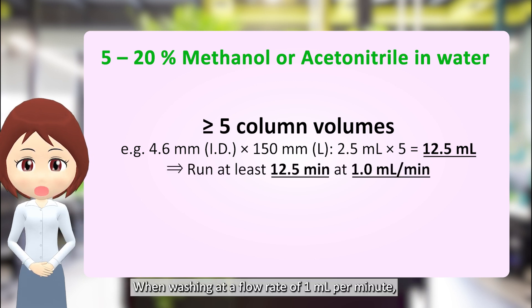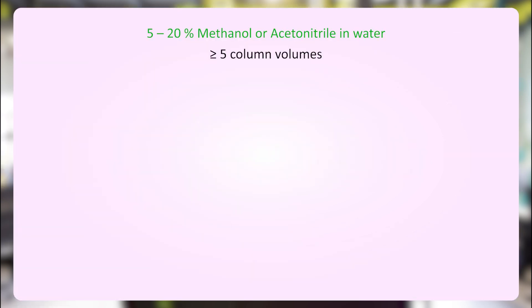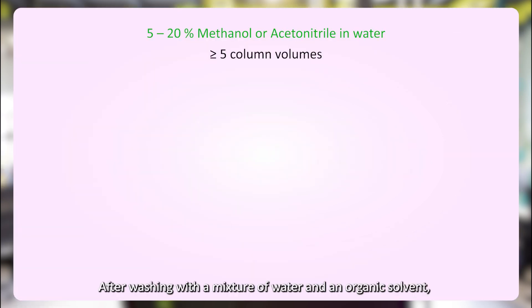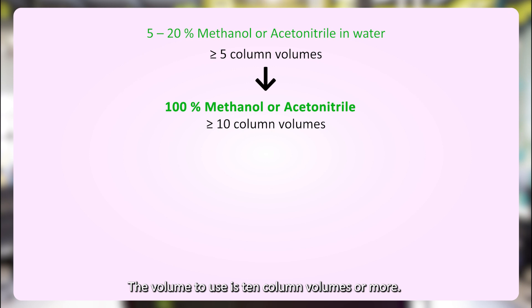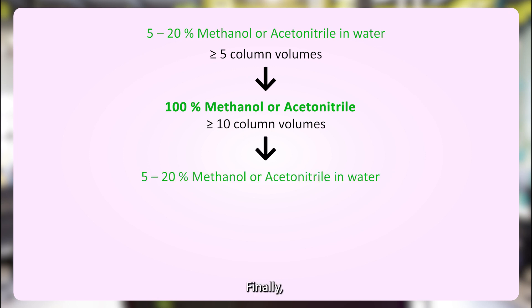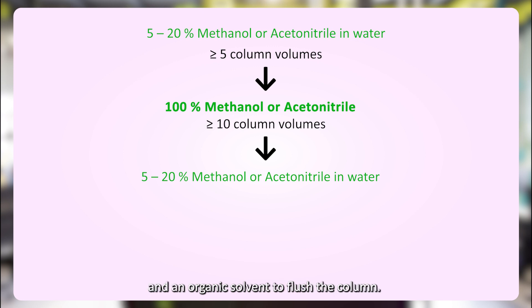The volume of the washing solvent must be 12.5 ml or more. When washing at a flow rate of 1 ml per minute, running time must be at least 12.5 minutes. After washing with a mixture of water and an organic solvent, wash the column with a 100% organic solvent using 10 column volumes or more. Finally, use the mixed solution of water and an organic solvent to flush the column again, using 5 column volumes.